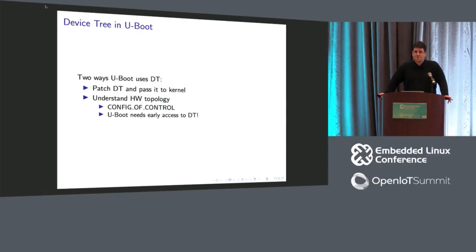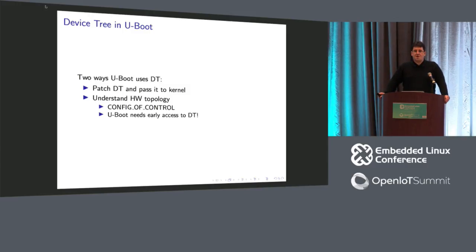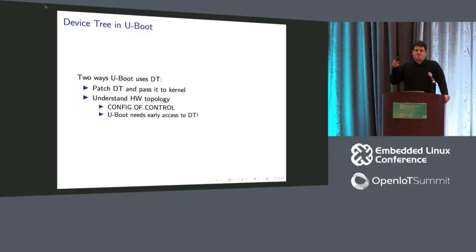U-Boot uses device tree in two ways. First, if your platform and Linux kernel are device tree capable, U-Boot passes the device tree to Linux, making modifications along the way — like patching a MAC address from the U-Boot environment into the device tree so it's shared between U-Boot and Linux. The other way is that U-Boot can set up device tree access very early in the boot process and extract hardware topology from the device tree, governed by the CONFIG_OF_CONTROL option.